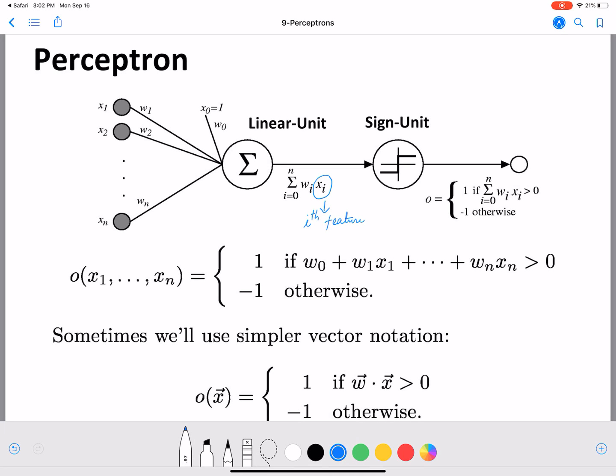Now xi in logistic is the ith feature, and wi is the weight of the ith feature. How important the ith feature xii is, is given by wi.